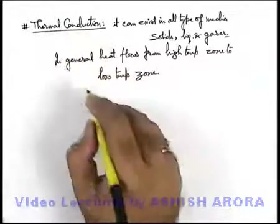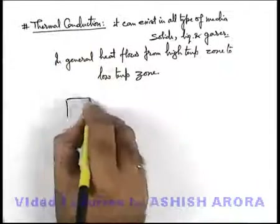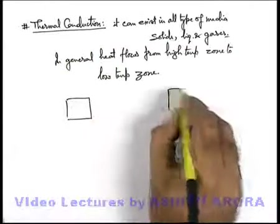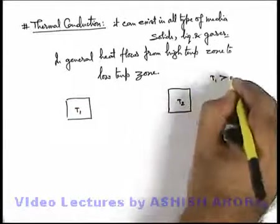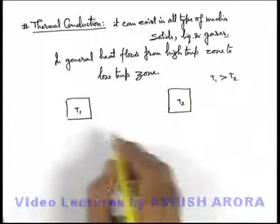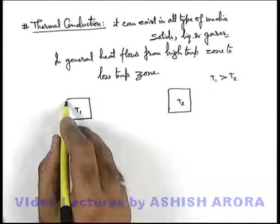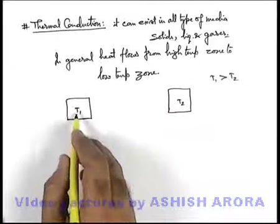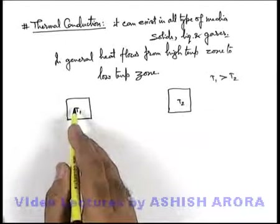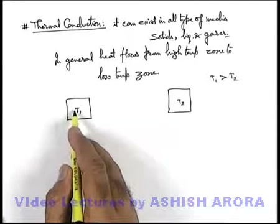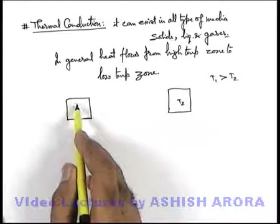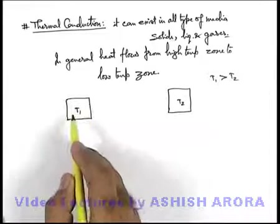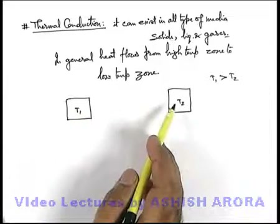If we specifically talk about thermal conduction, we can explain it with the help of an illustration. Say there are 2 different bodies which are at temperatures T1 and T2, and it is given that T1 is greater than T2. As we discussed earlier, temperature is a measure of the random oscillation energy of a particular substance. So as T1 is greater than T2, we can state that the thermal agitation or oscillation energy of individual particles of the first body is more than that of the second body.